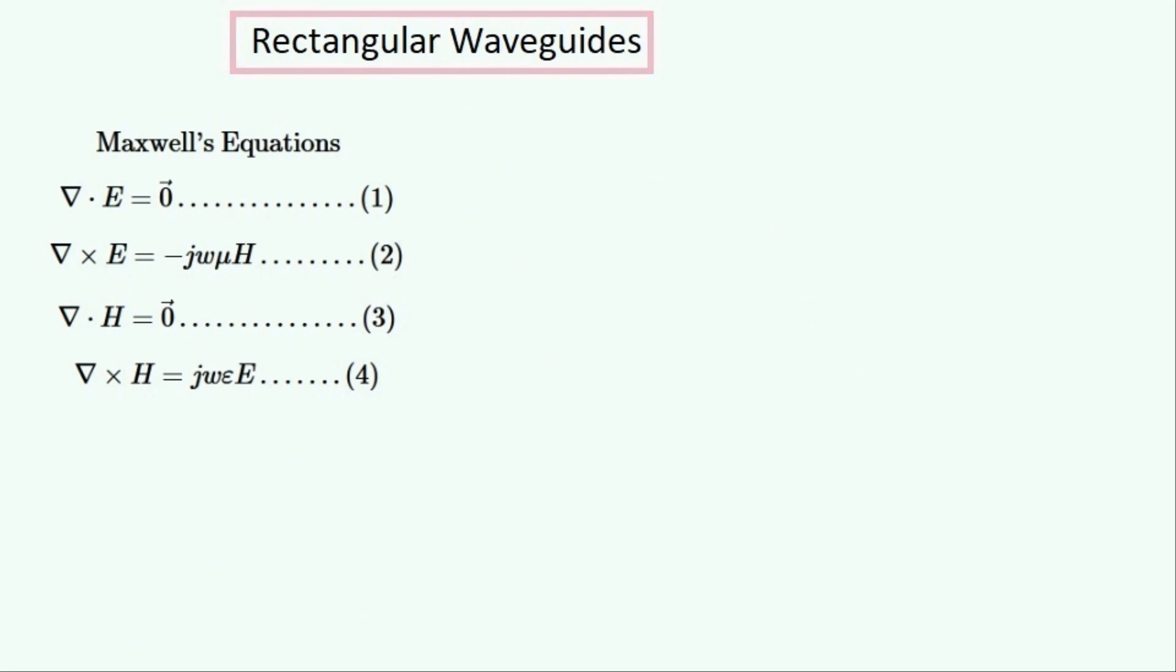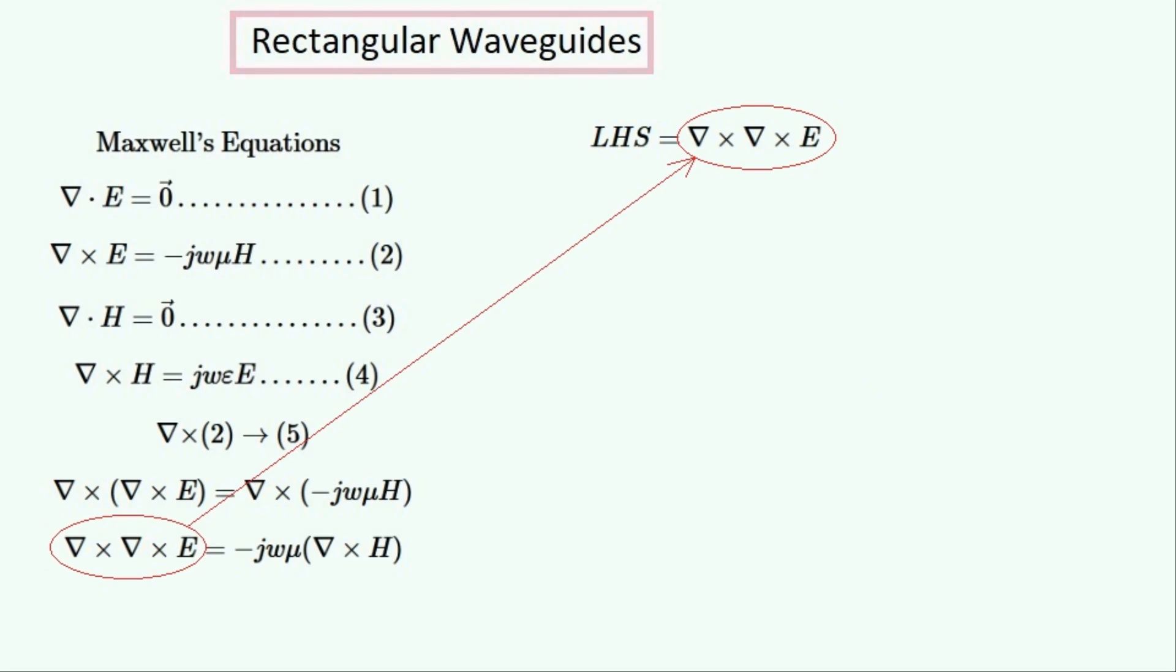I'll just write them out again here in the corner so that we can watch them during this first derivation, where we'll derive the wave equation for the electromagnetic field inside the waveguide. We'll take the curl of equation 2, and the first thing we can do is factorize these constants outside of the curl.